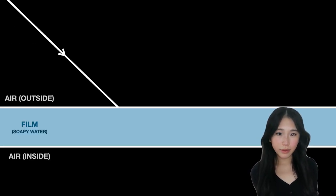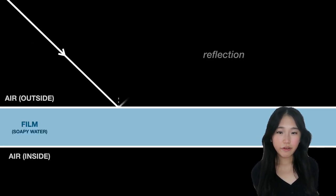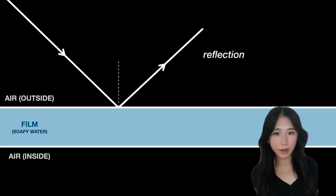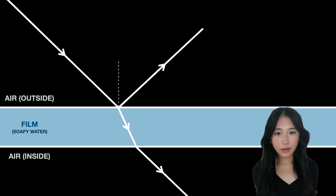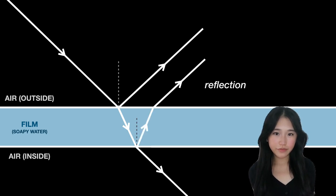When light encounters a soap bubble some of the light waves are reflected off the outer surface of the bubble while others are refracted, enter the inside of the soap bubble, and are reflected off the inner surface.